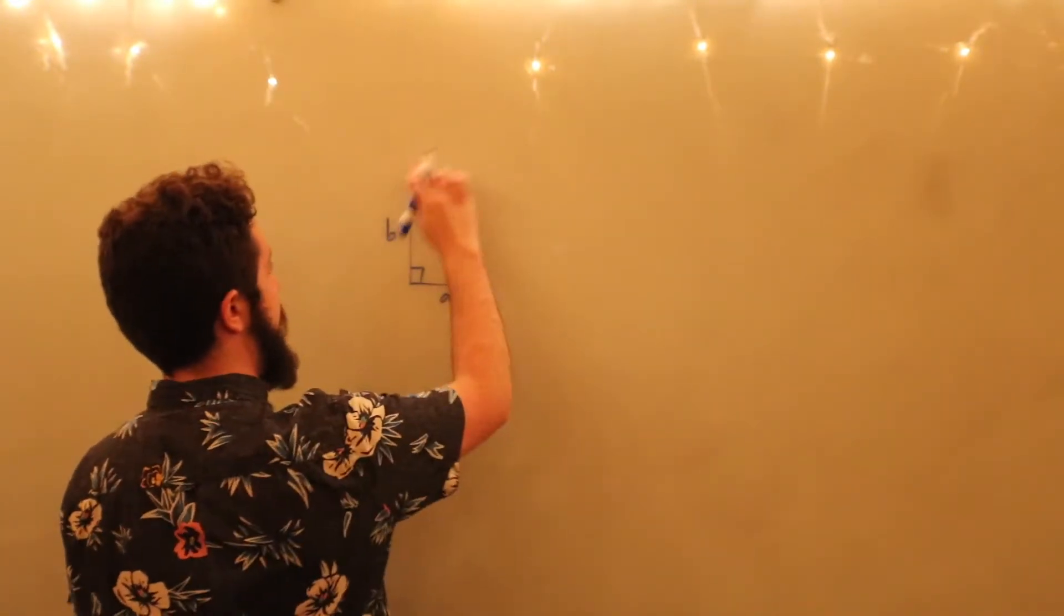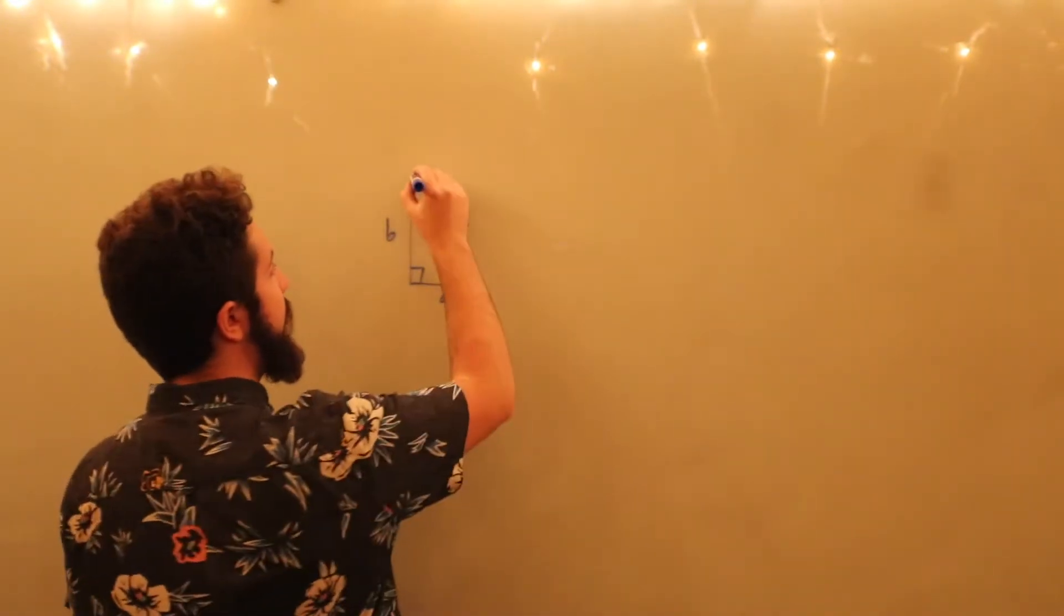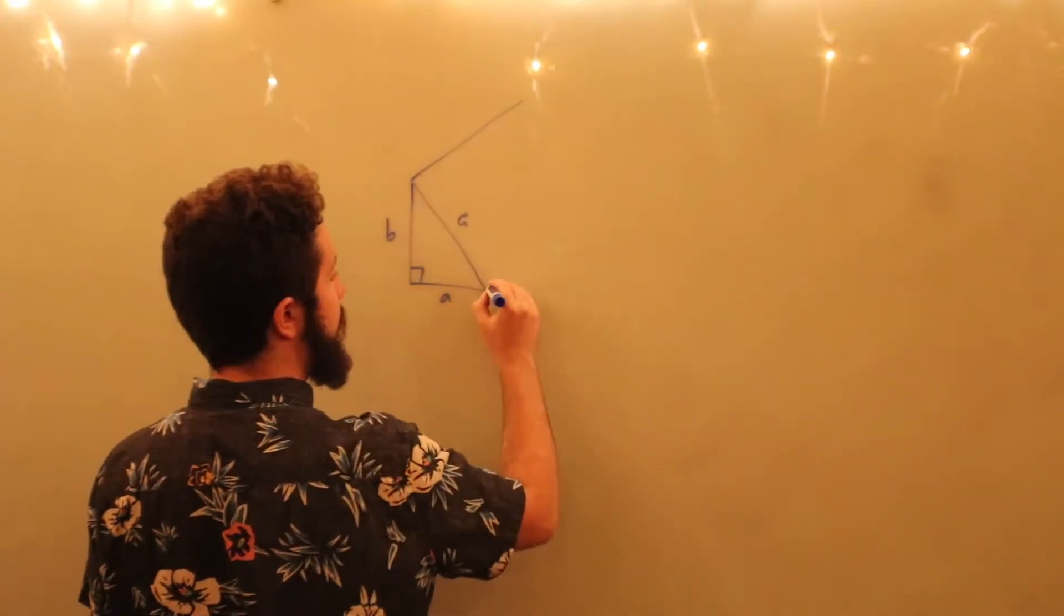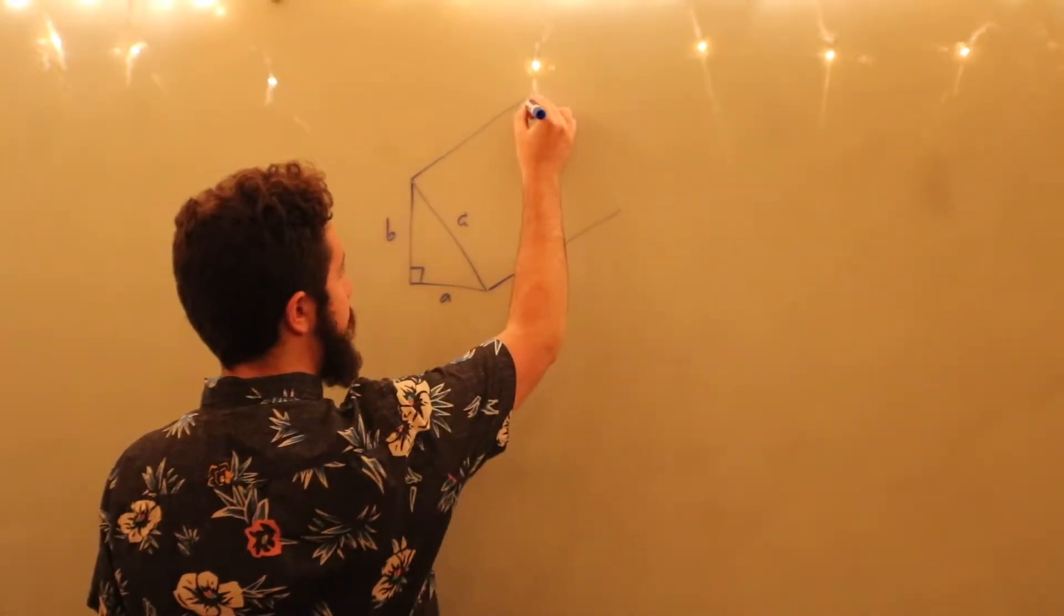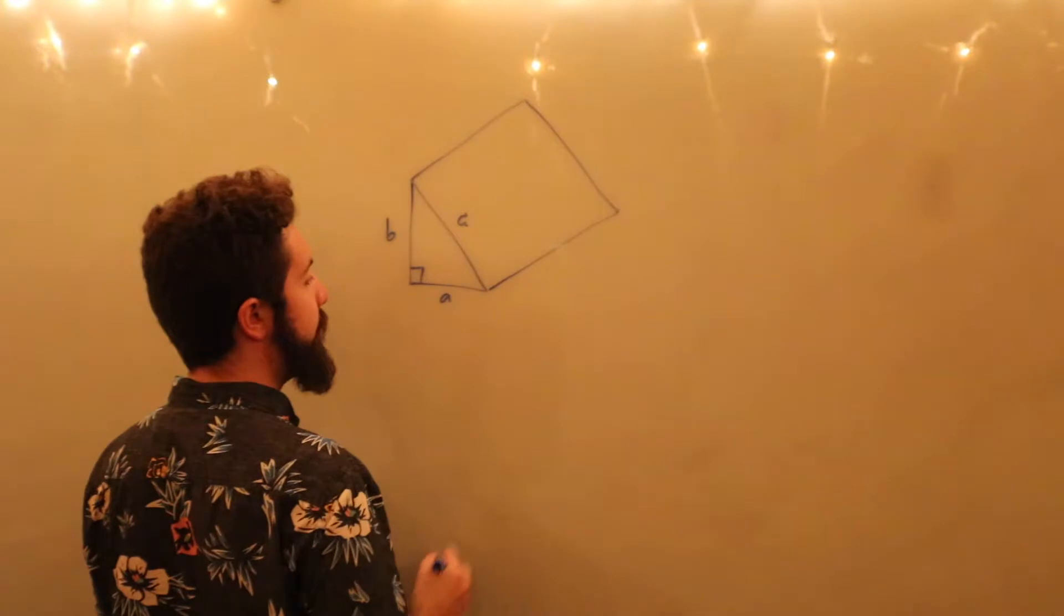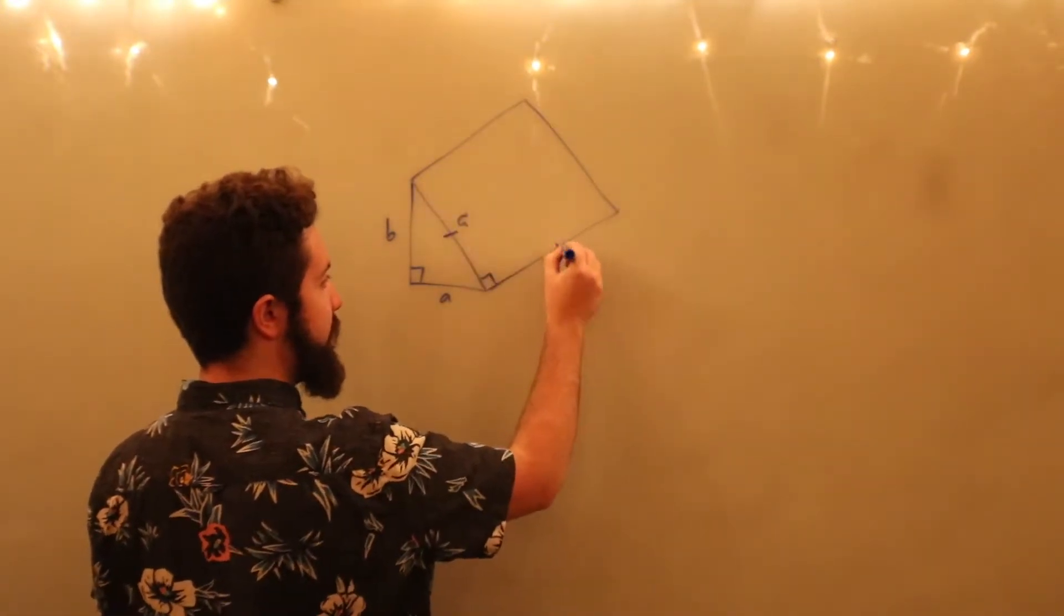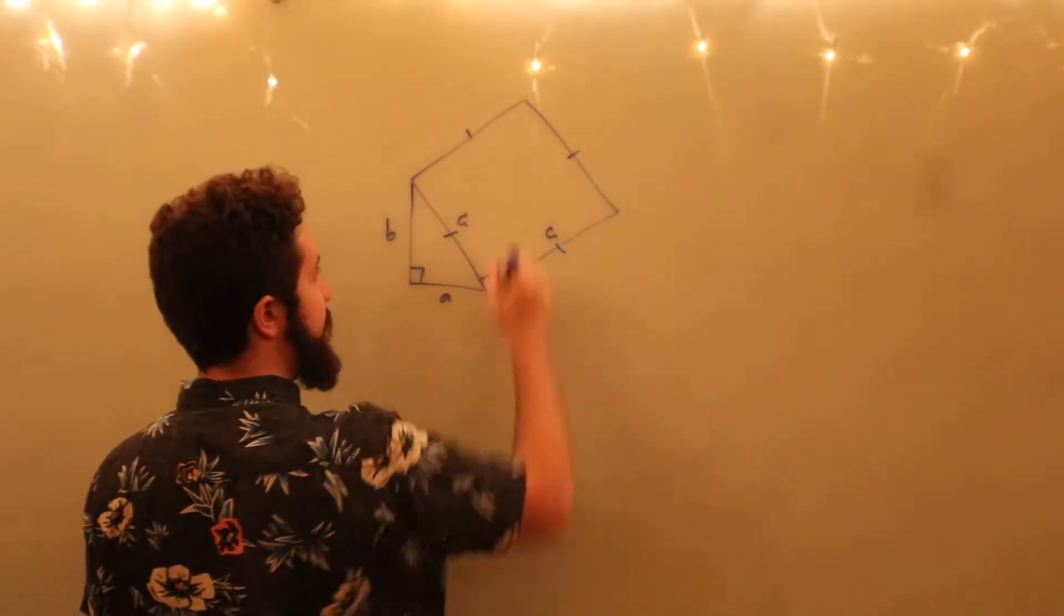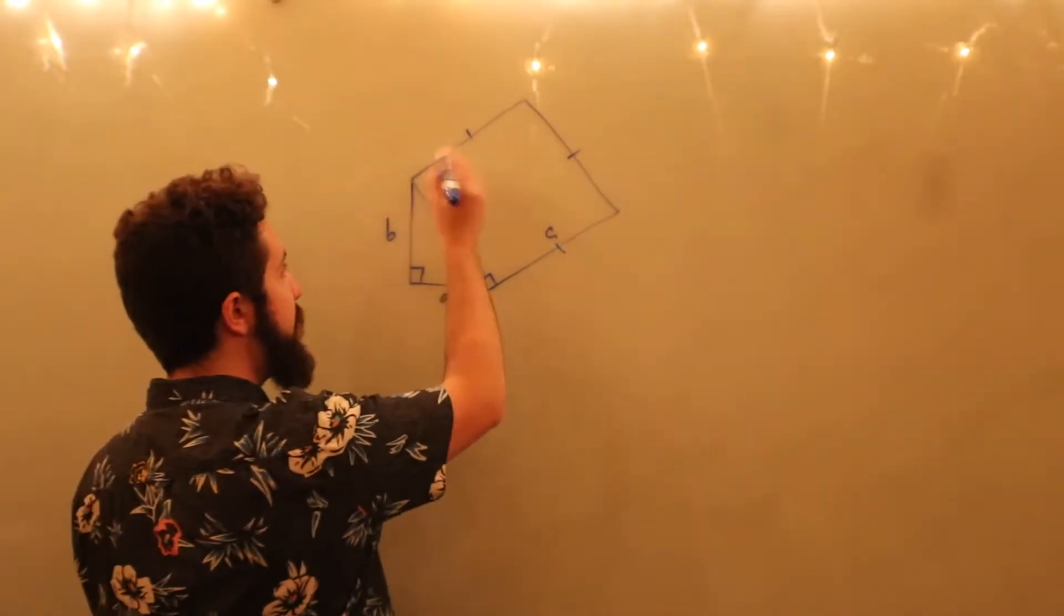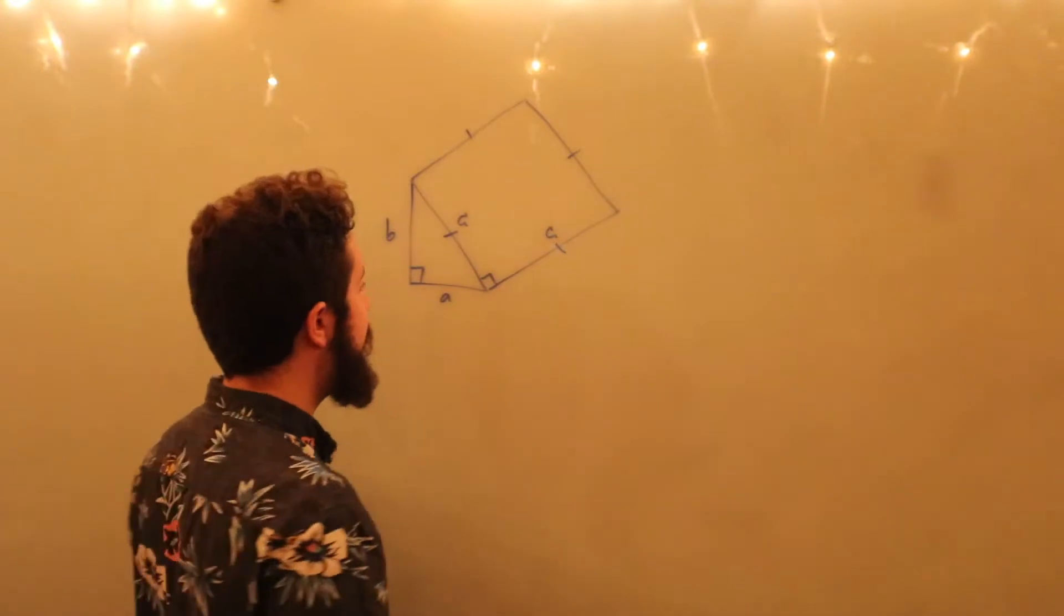All right, now what we're going to do is construct upon the hypotenuse the square which has side length hypotenuse. So this is going to be C, that's going to be C, that's going to be C, and they're all going to be right angles.